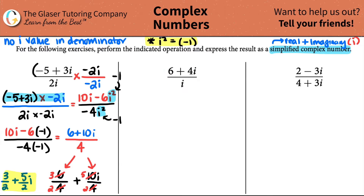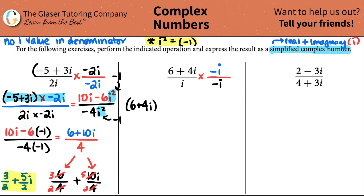Let's try the same idea for the second one: six plus four i, all over i. We don't like i's in the denominator, so we multiply by the opposite of positive i, which is negative i. Remember you have to be fair — multiply both numerator and denominator by negative i, because in theory it cancels to one.